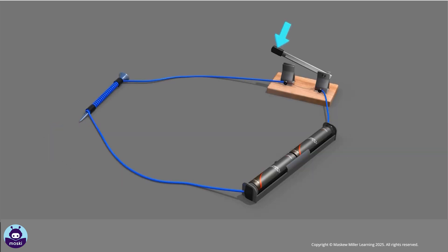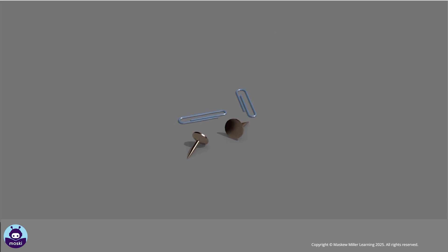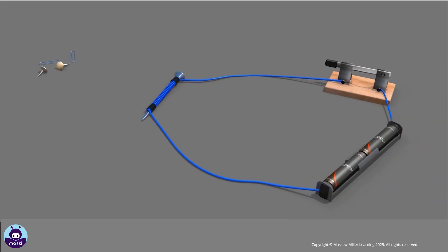Add a switch and close it. When small iron objects such as paper clips or pins are brought near the nail, they will be attracted to the nail.